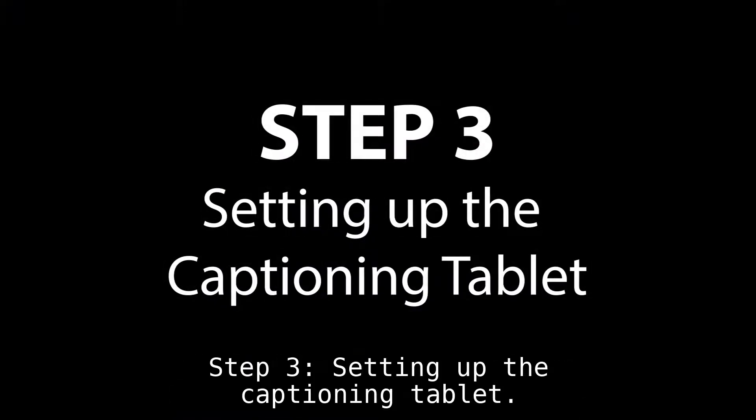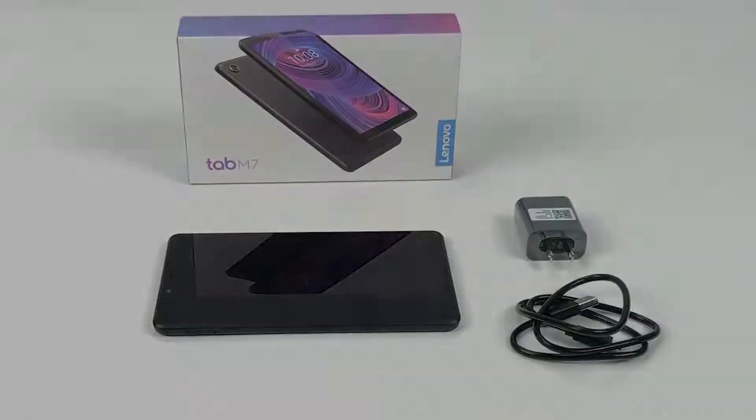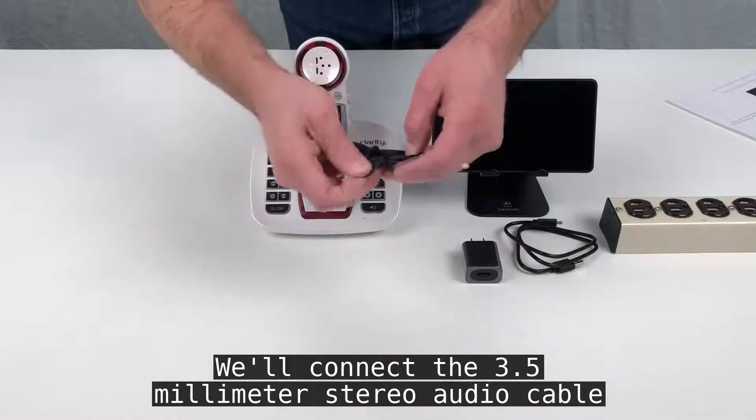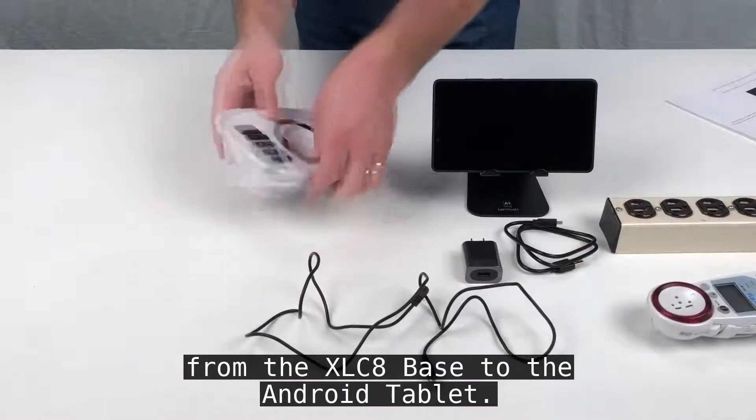Step 3: Setting up the captioning tablet. Connect the 3.5mm stereo audio cable from the XLC8 base to the Android tablet.